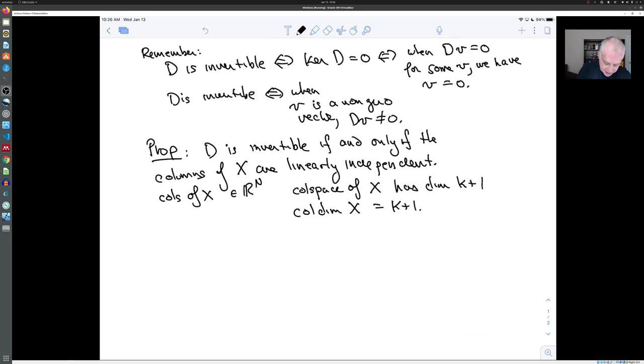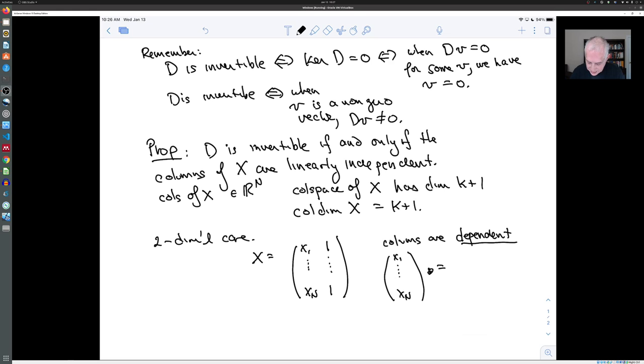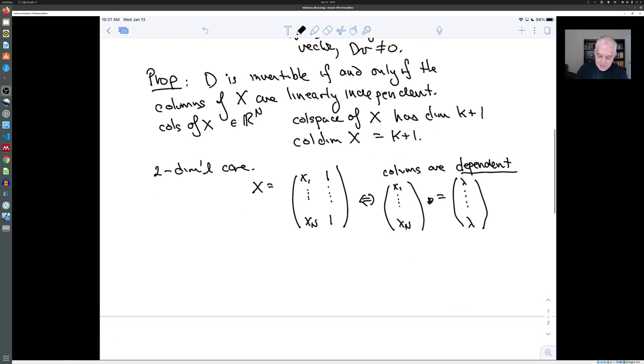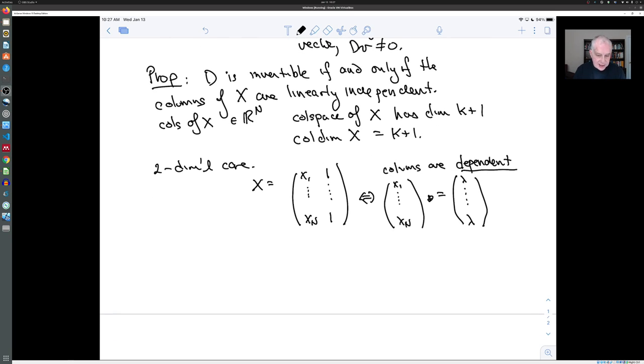And just to compare this with the two-dimensional case, our very first example, you remember then that the matrix x looks like x1 down to xn, 1 down to 1. So maybe a better way to put it is to say that the columns are dependent or linearly dependent is to say that x1 down to xn is equal to a constant vector. And we saw already in the case of the two-dimensional situation that if all the x's are the same, then there's no way that the least squares problem can work anyway.